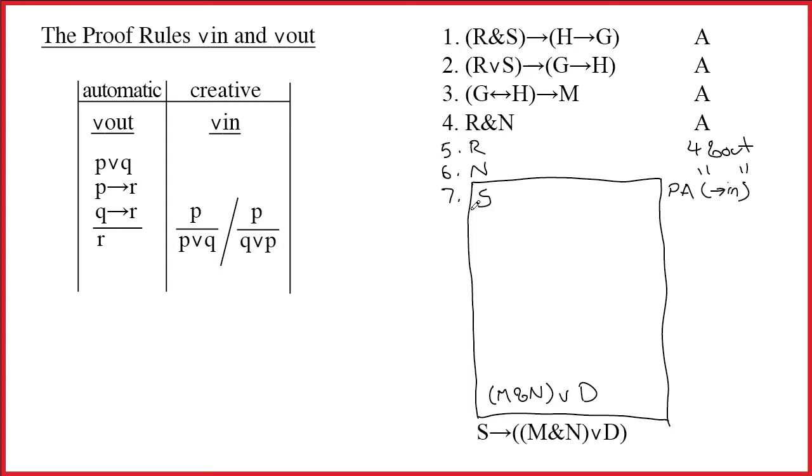Alright, at this point I go back up to the top and let's see if I can work on anything. When I look at line 1, I know that it says if I could find R and S then I could write H arrow G. And so I am inspired to go look for R and S and I find them both and I can put this together and say R ampersand S by 5, 6 ampersand in.